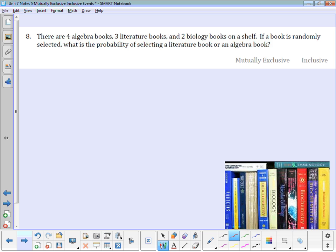Let's take a look at number 8. It says there are four algebra books, three literature books, two biology books on a shelf. What's the probability that you select a literature book or an algebra book? First of all, can something be a literature book and an algebra book at the same time? No. So these are mutually exclusive events.